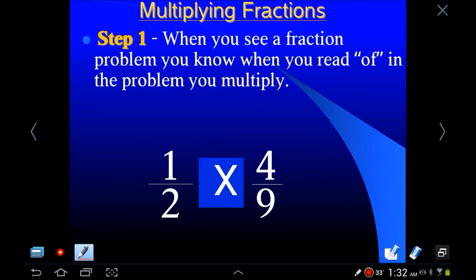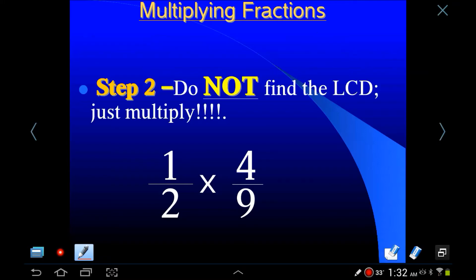I'm going to talk you through this step by step. When you see a fraction problem, you know when you read 'of' in the problem you multiply. Another thing that you need to know, step two, is that you don't have to find an LCD. You don't have to find the least common denominator. When you added, when you subtracted fractions, you had to find the least common denominator of 2 and 9, which is 18. But with multiplication and division, I might add, you don't have to find an LCD. No LCD, which is kind of good news.